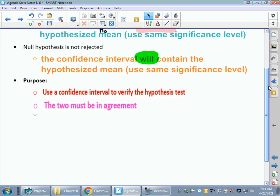So it will contain it. If we like it, we don't reject it, our confidence interval should be centered around that mean or standard deviation or proportion. So the purpose of doing this is to verify our hypothesis test with a confidence interval. It's a double check. It's knowing that we did this hypothesis right, all of our data agrees with our decision to reject or not reject. The two must be in agreement.